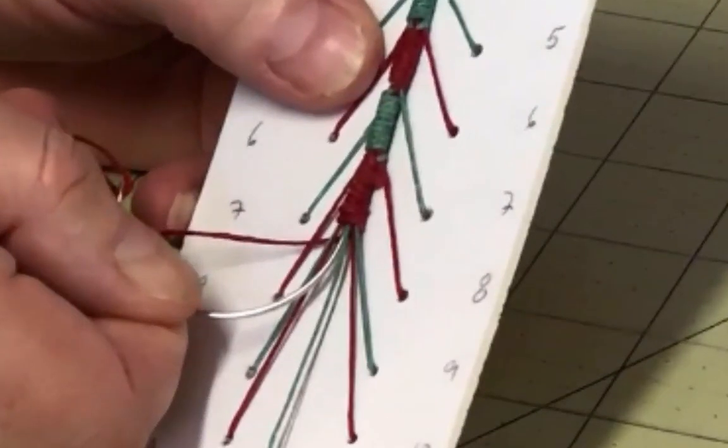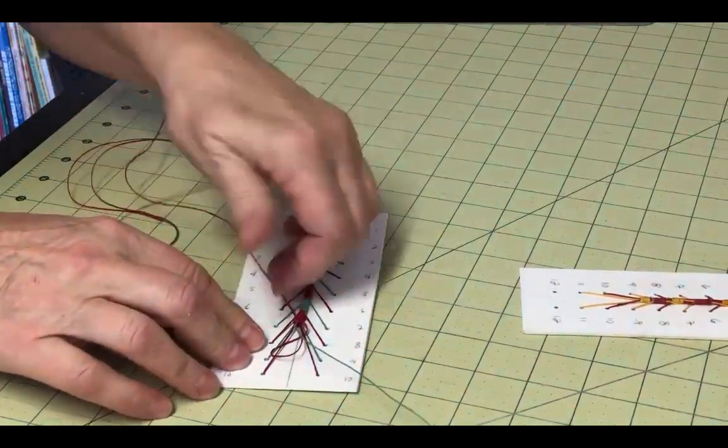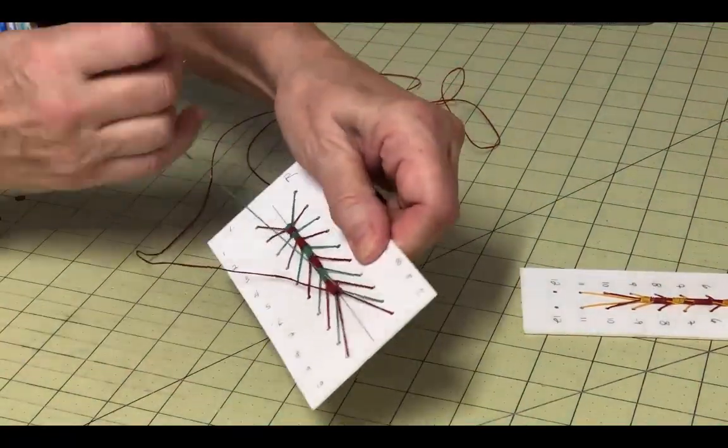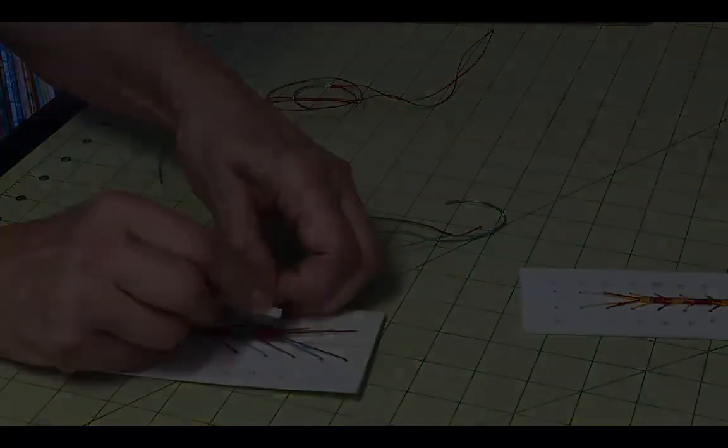Once you're done packing the caterpillar segments, run the needles one at a time up through the center of the caterpillar body through all or part of one or two segments and then trim your thread. One word of advice, as you are packing the last couple of segments, wrap them a bit looser so it's easier to run the needle up between the packing.